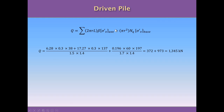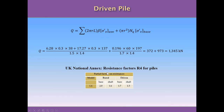The key difference between the shaft and base terms is that the shaft uses average effective stress summed over as many layers as needed, while the base uses only the effective stress at the tip. Per the UK National Annex to Eurocode 7, a coefficient of 1.7 is applied to the base term, 1.5 to the shaft terms, and a model factor of 1.4 divides both terms because the beta method is an approximation.